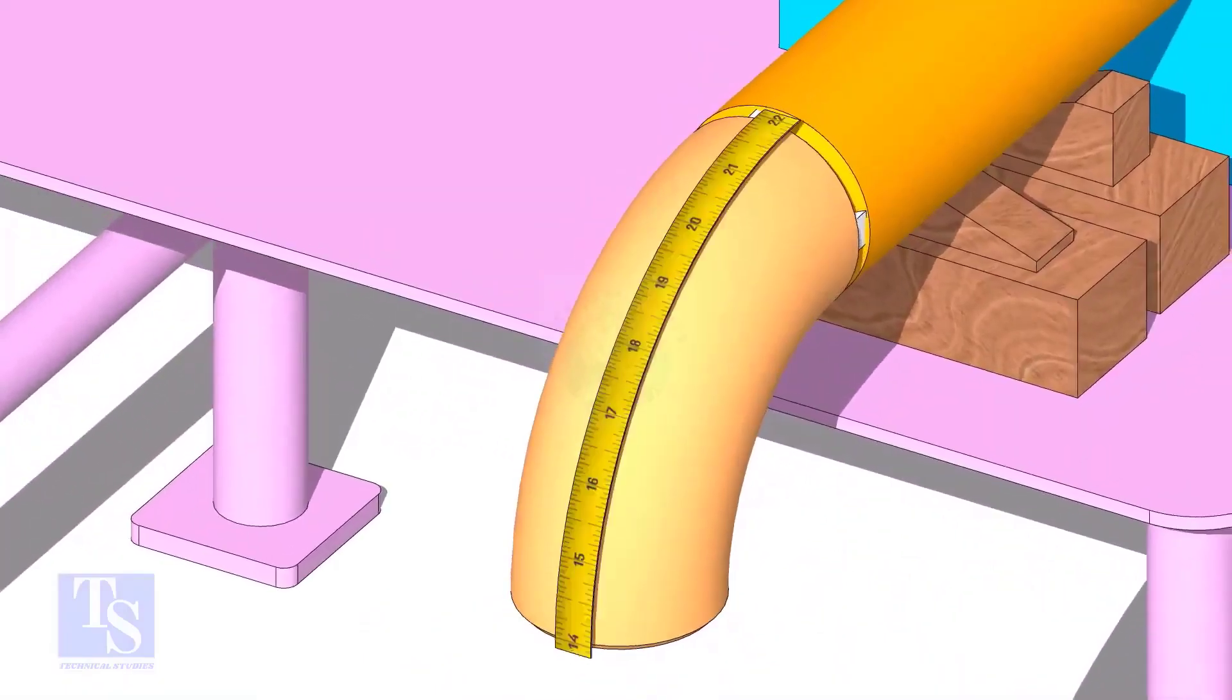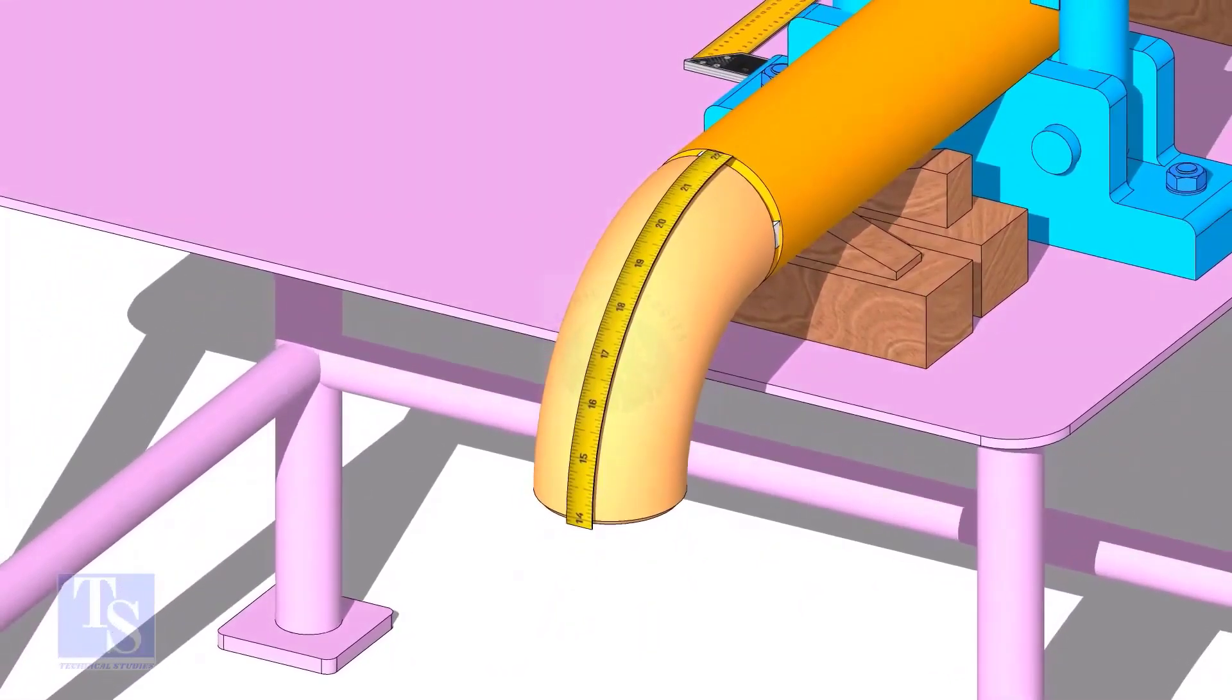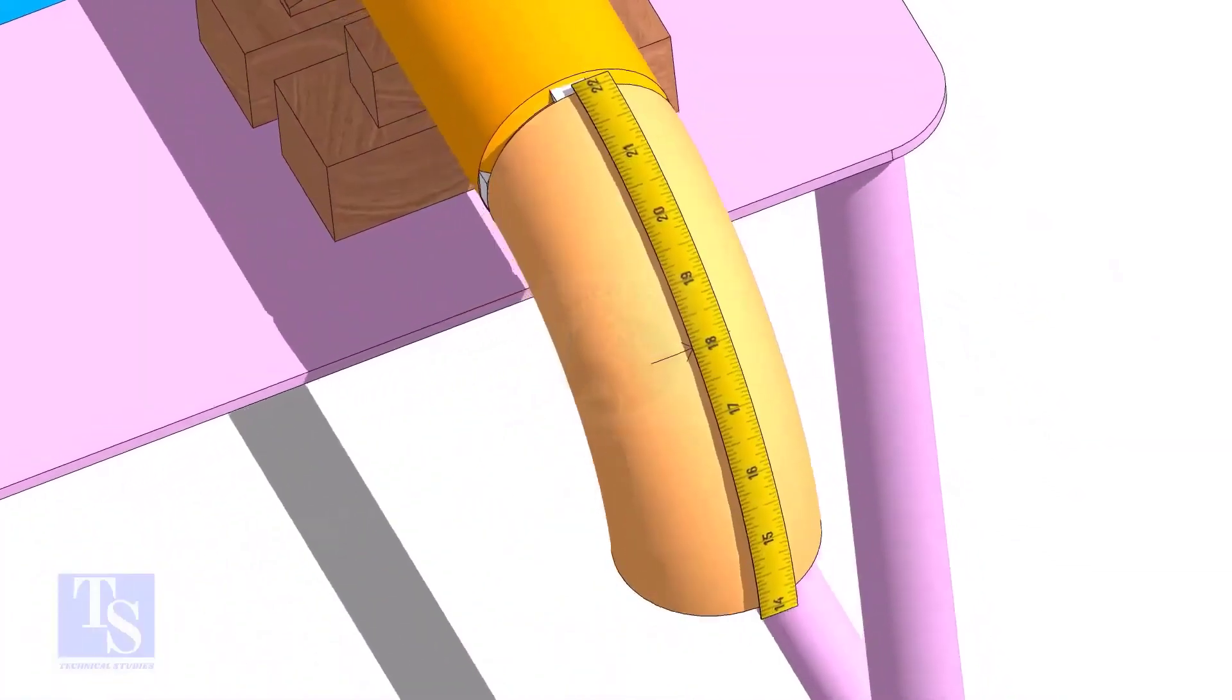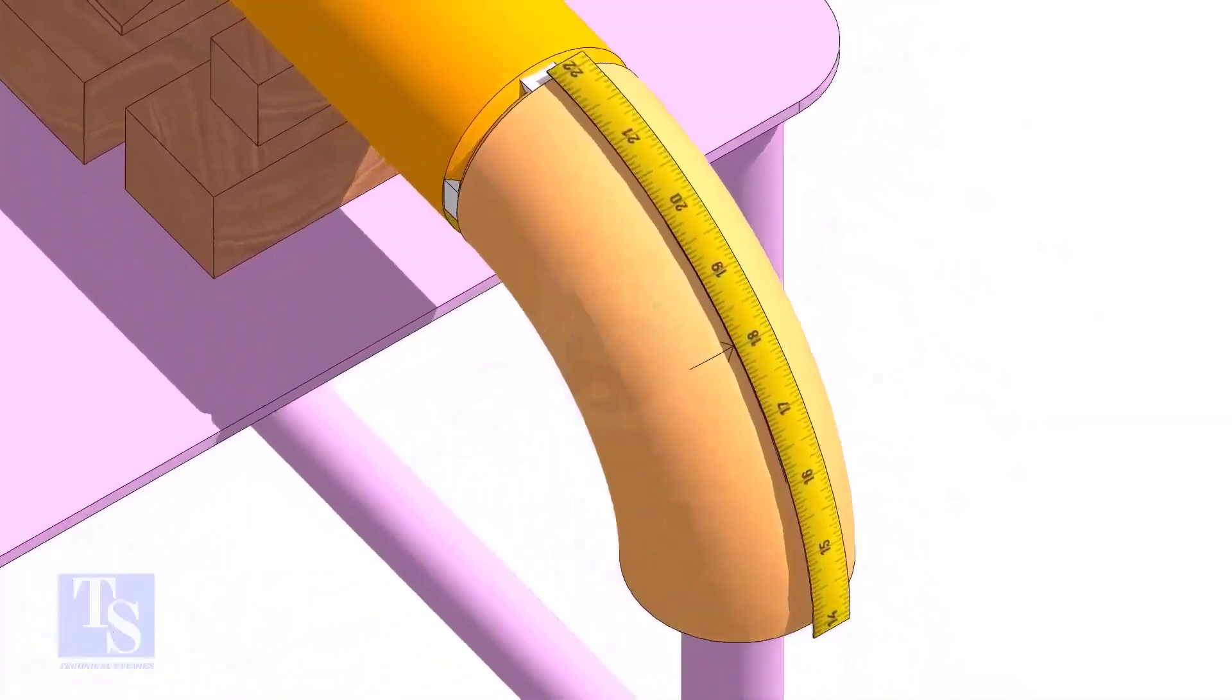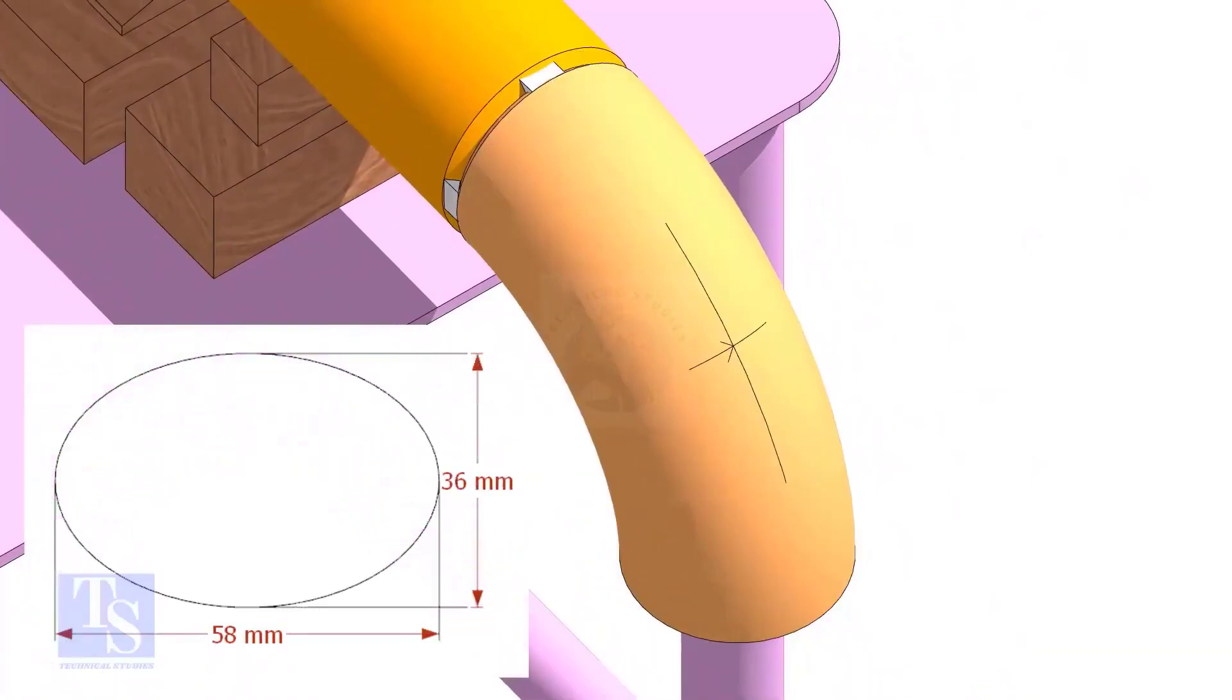Measure the outer circumference of the elbow and mark the half circumference on the center line as shown. Draw the elliptical circle on the elbow and cut the opening.